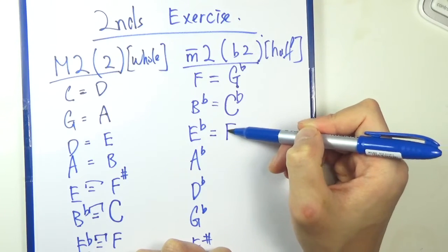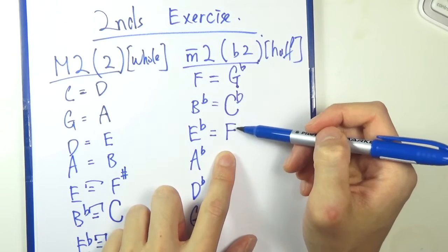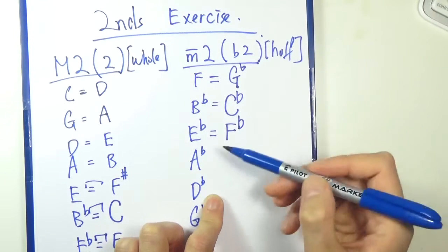E flat, quantity F. But then that's too big. E flat to F is a whole step apart, so I want to flatten the F.